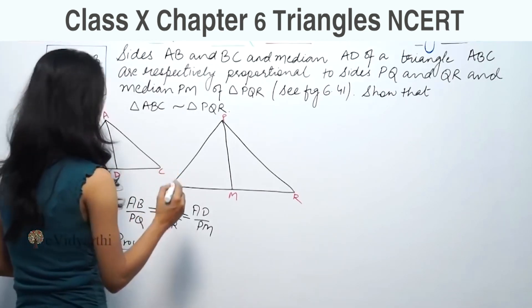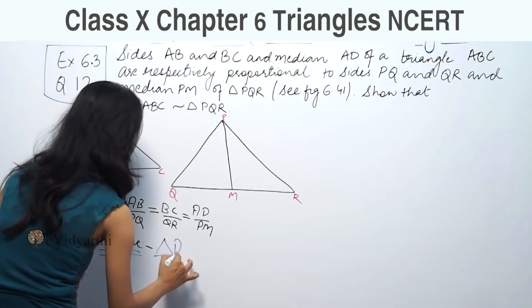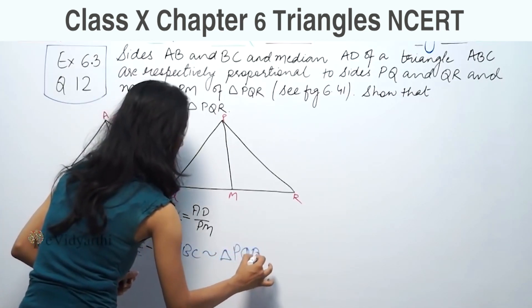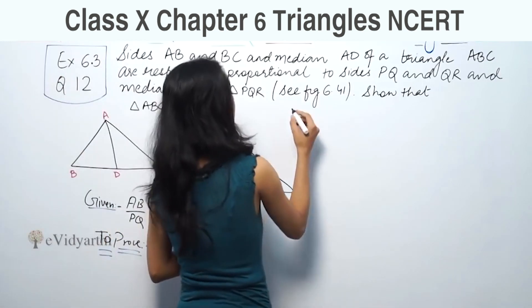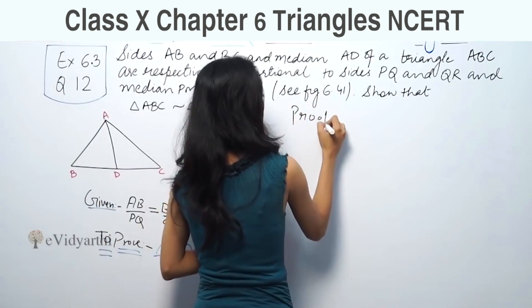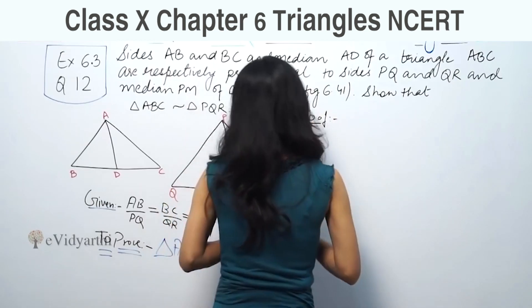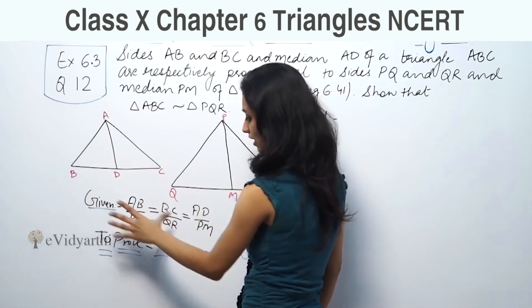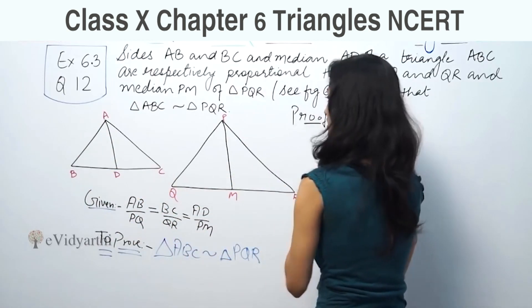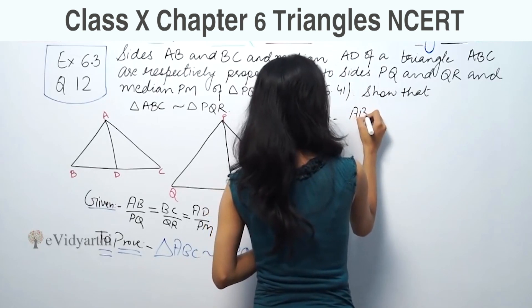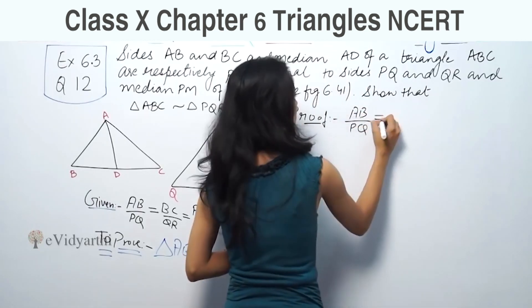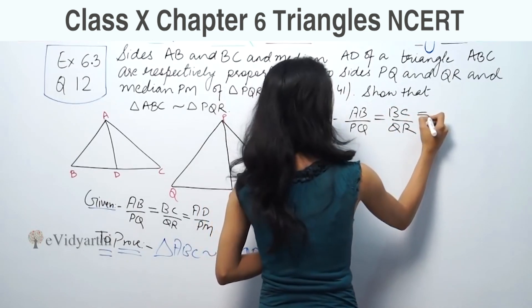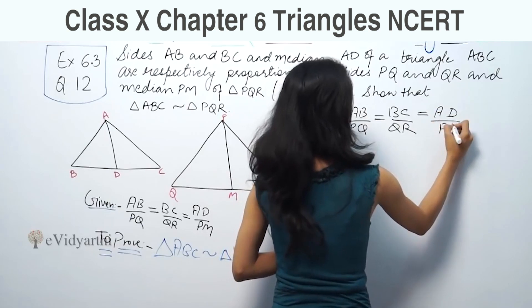To prove: triangle ABC is similar to triangle PQR. Now for the proof, we have AB upon PQ equal to BC upon QR is equal to AD upon PM.